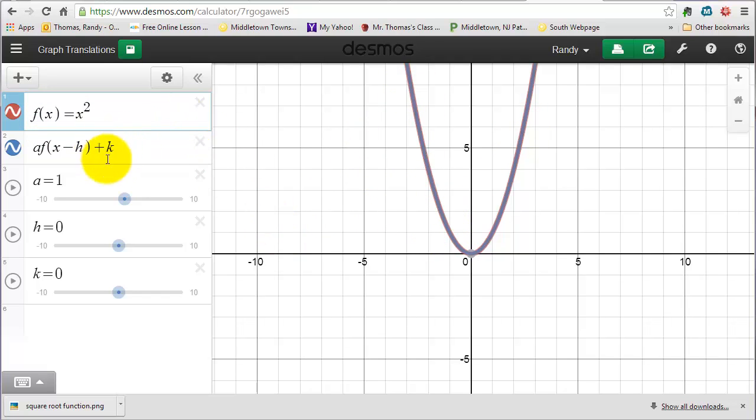So let's explore or refresh what happens with the k. If you remember, when we add a number to the whole function, it causes a vertical shift. So if we start making k positive, you can see that our function, the vertex and the entire function, is shifting upwards. And if we make k negative, which would result in subtracting a number from the function, we can see we are shifting down.